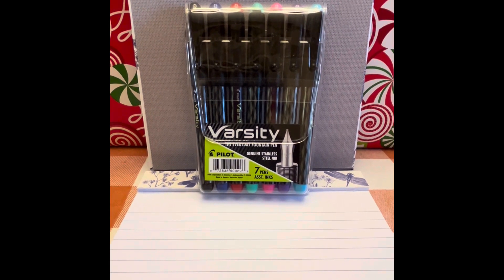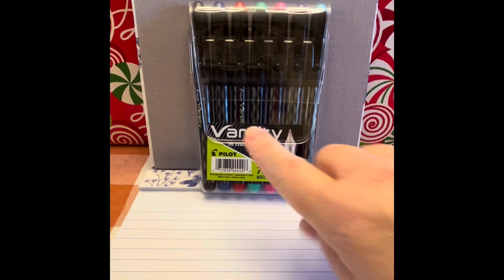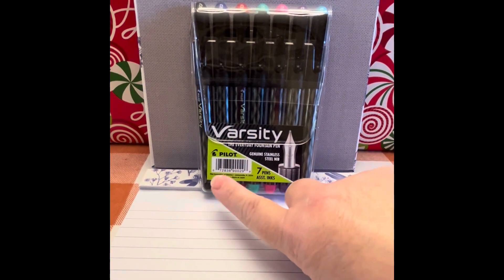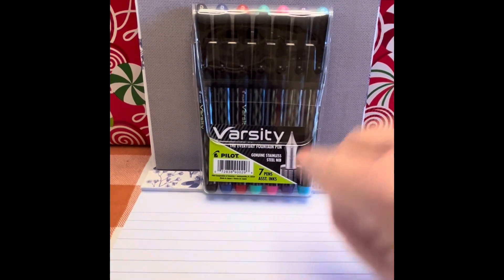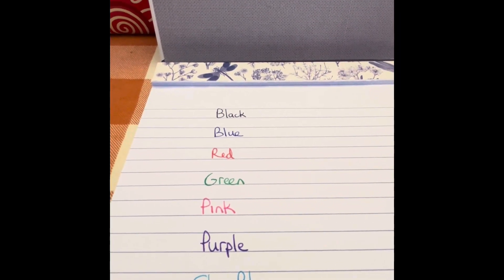Now these are disposable fountain pens so when the ink is gone you just toss them. And they are the Pilot Varsity and there are seven different colors of ink. Now I was going to start by showing you the different colors that come in the pack.